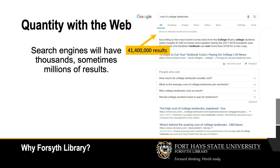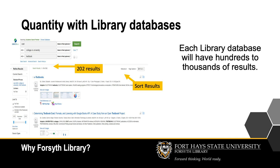Search engines will have thousands, sometimes millions, of results. Duplicate sources are not filtered out and are listed according to clicks or paid advertising, not the information they contain. Each library database will have hundreds to thousands of results. While this is still a lot, duplicates and other information can be filtered and results can be sorted according to keyword relevance.